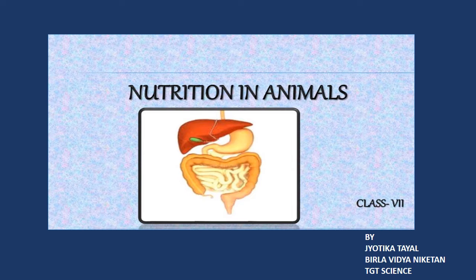Hello students, today we are going to discuss the digestive system in humans. The digestive system includes all the organs responsible for intake of food, its digestion, absorption, assimilation, and removal of undigested waste. It consists of the alimentary canal — that is, the digestive tract — and associated digestive glands. The alimentary canal in humans is approximately 9 meters long.